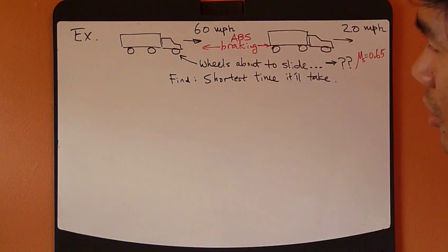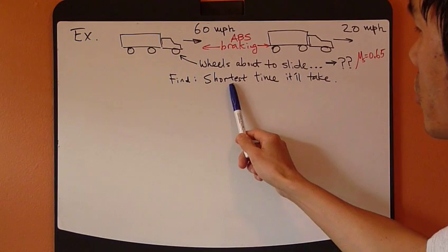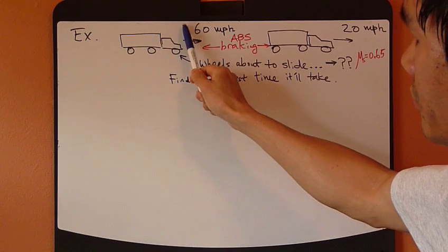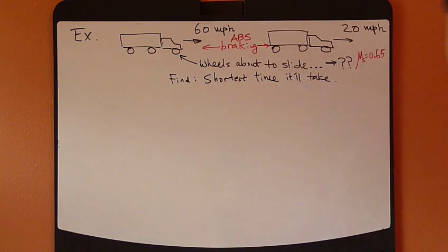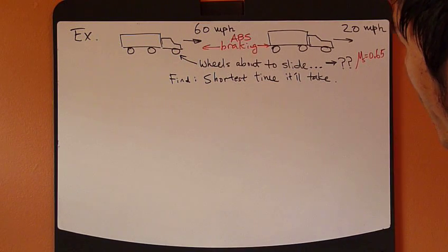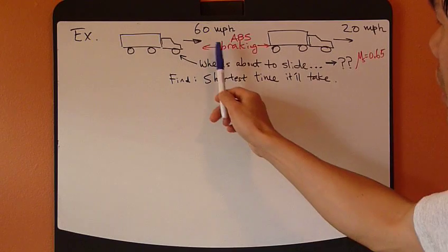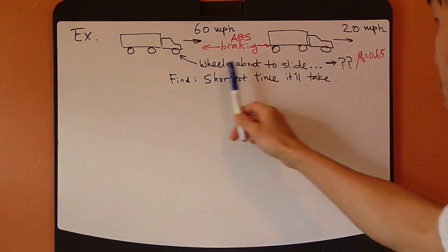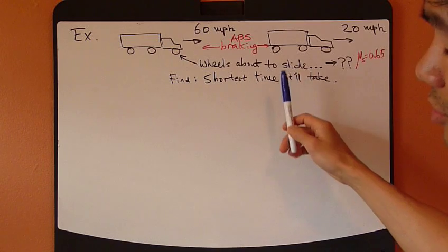You're asked to find the shortest amount of time that the truck will go from 60 down to 20. During this braking process the wheels and tires are about to slide, just before you start sliding.